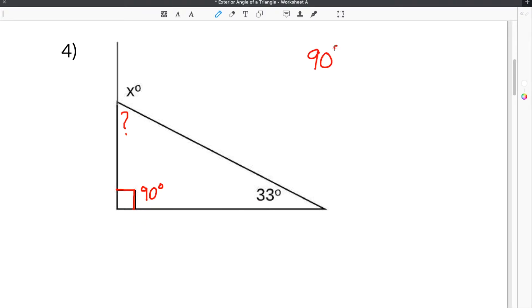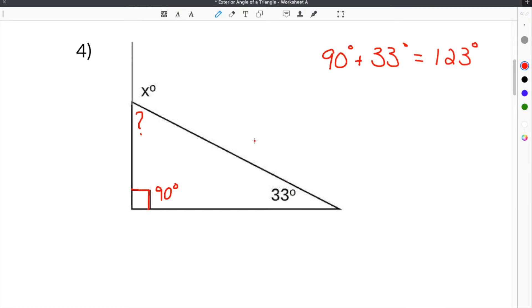So we're going to take 90 degrees and add it to 33 degrees to get 123 degrees. So we know that this angle and this angle add up to 123 degrees. And we know that all the angles in a triangle have to add up to 180. So we could have done 180 minus 123, which gets us 57 degrees. So we now know that this question mark angle is 57 degrees.